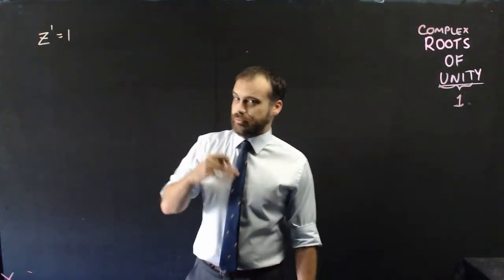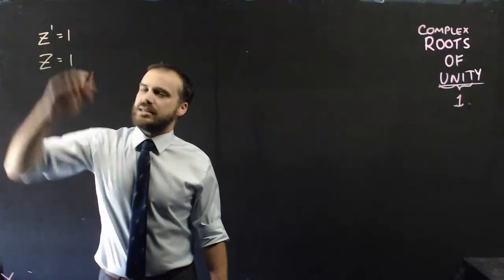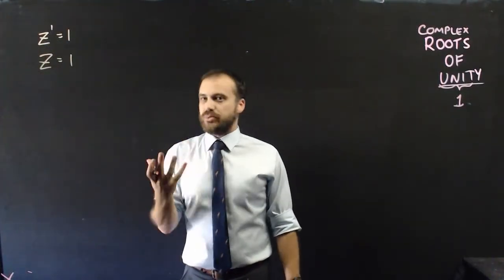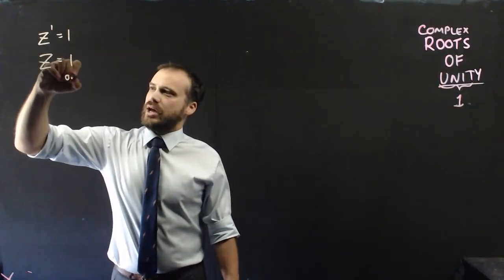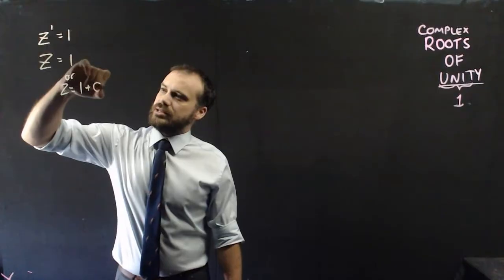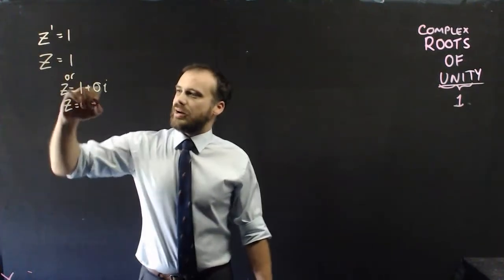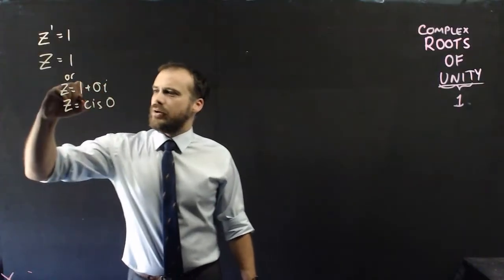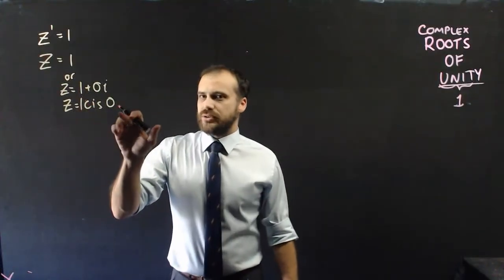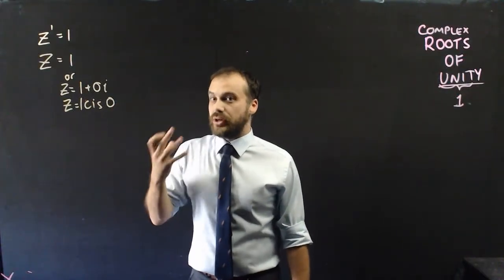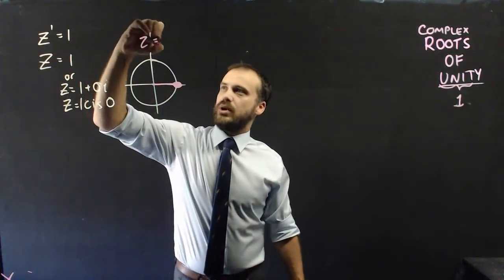We'll start with the first root of one, because that's really straightforward. We're saying a complex number raised to the power of one equals one. Well, that's just the same as saying the complex number is equal to one. I could express that as z = 1 + 0i — 1 in the reals and 0 in the imaginary — or I could write it as cis 0, or 1 cis 0. That just says modulus 1, angle 0. And I could draw this on an Argand diagram — this is my one answer to z^1 = 1.